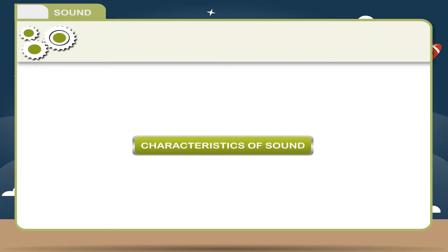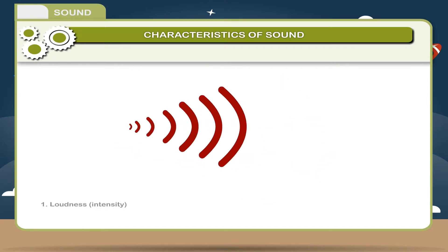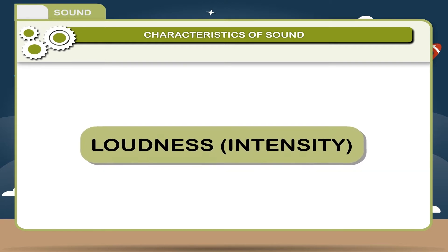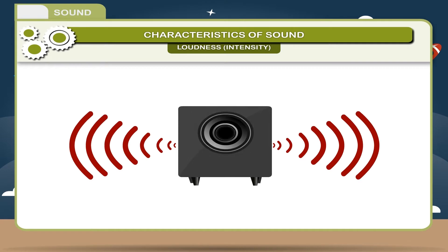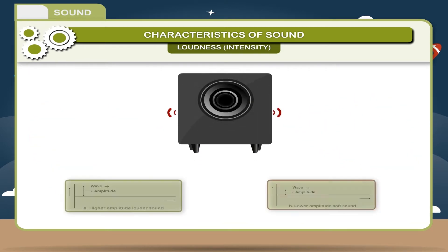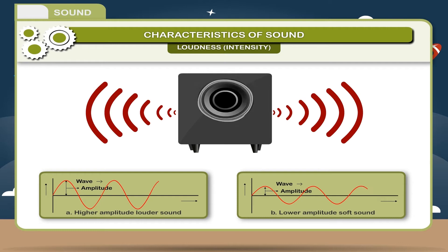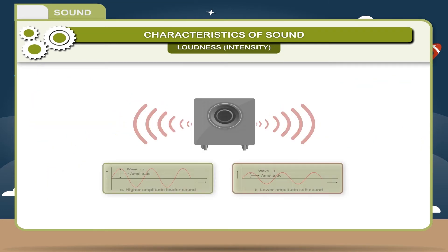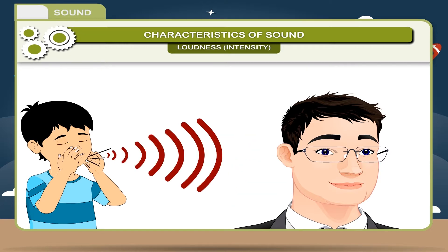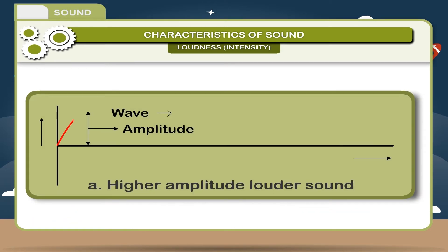Characteristics of Sound: Sound has three characteristics — Loudness/Intensity, Pitch, and Quality/Timbre. Loudness/Intensity is the characteristic by which a loud sound can be differentiated from a faint sound. It depends on amplitude — if the amplitude is high, the sound will be louder, otherwise it will be faint. It also depends on the distance between source and observer, surface area of the vibrating body, density of the medium, and presence of resonant bodies. Figure A represents a loud sound because its amplitude is higher.